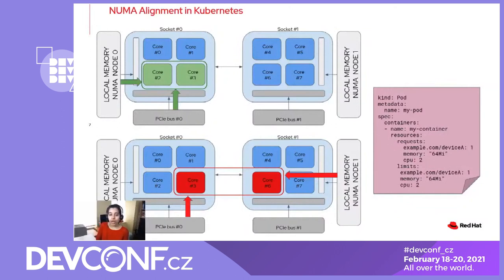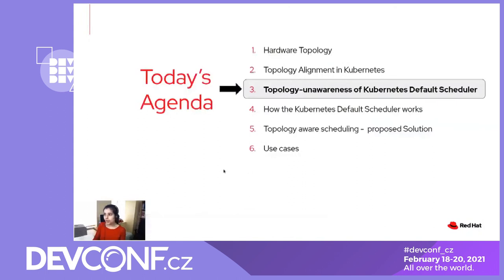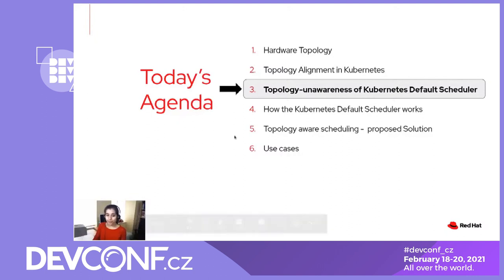Now that we know Topology Manager takes care of resource alignment, you might ask: what's the gap? The challenge is that the default scheduler is topology unaware. Despite the introduction of Topology Manager enabling topology alignment of requested resources, the scheduler's lack of knowledge of resource topology can lead to unpredictable application performance, general underperformance, and in the worst case a complete mismatch of resource requests and kubelet policies — basically scheduling a pod where it's destined to fail, potentially entering a Topology Affinity Error failure loop.